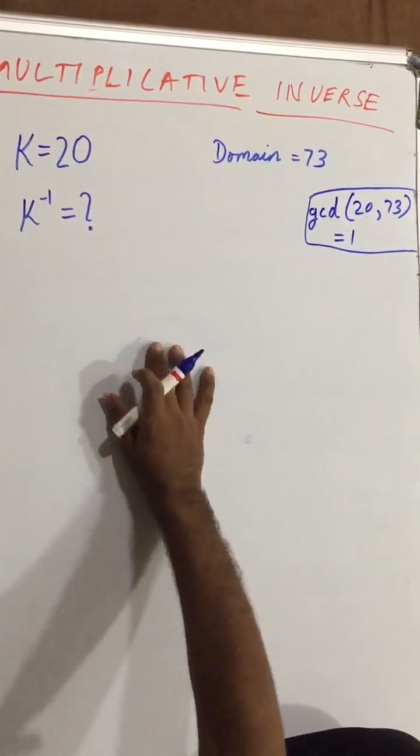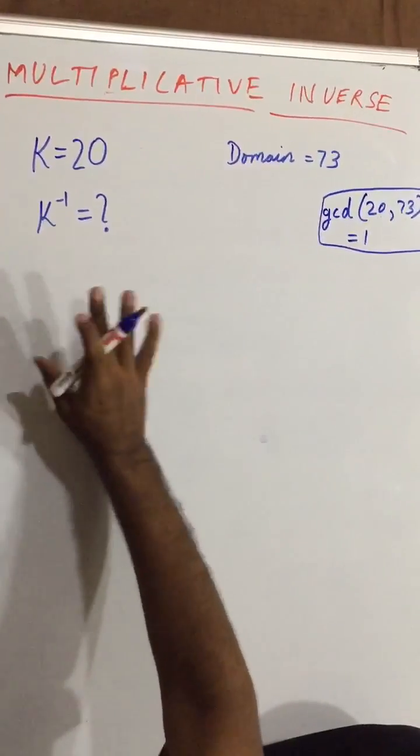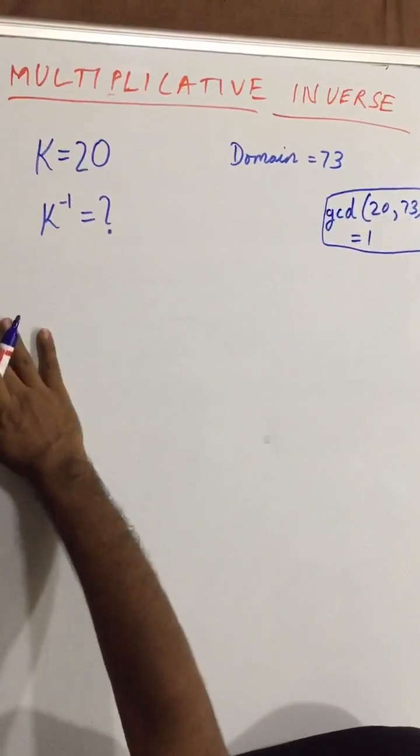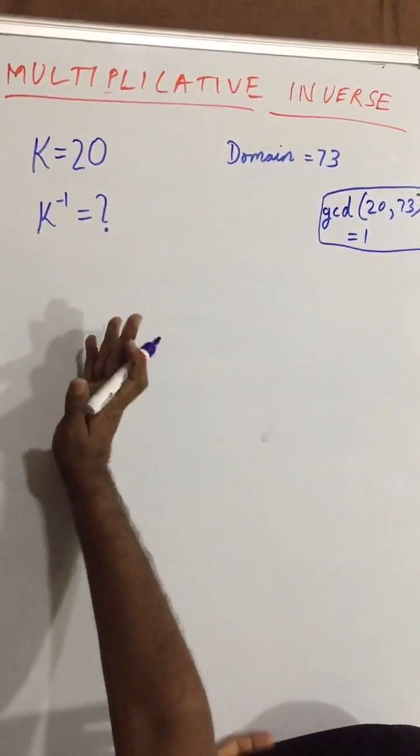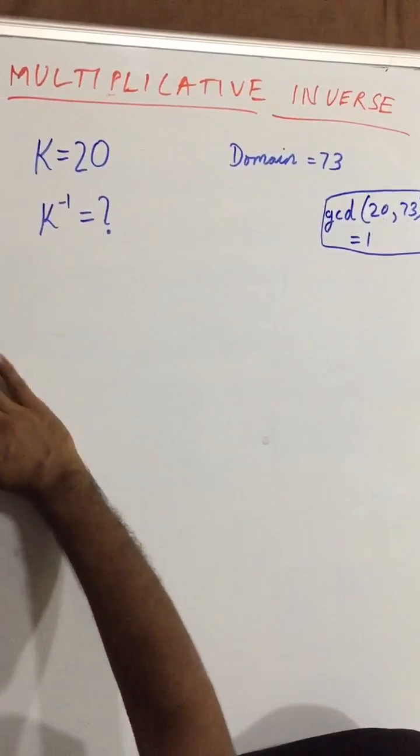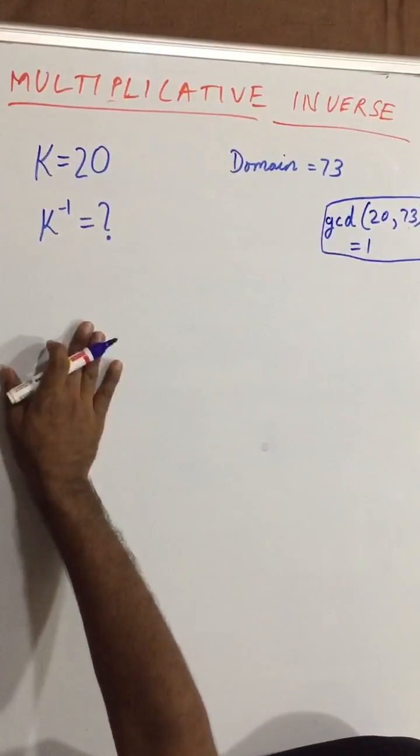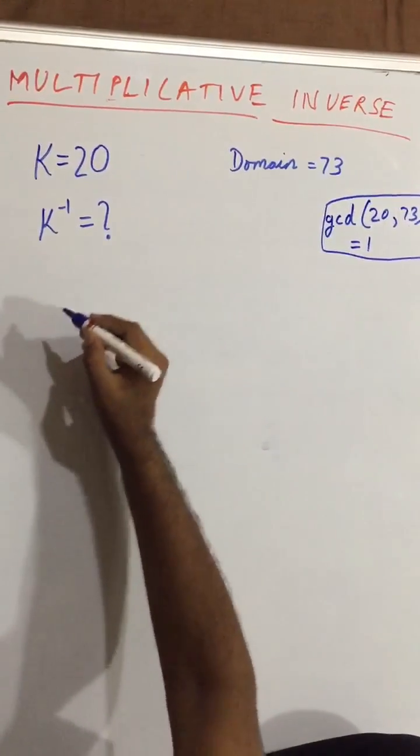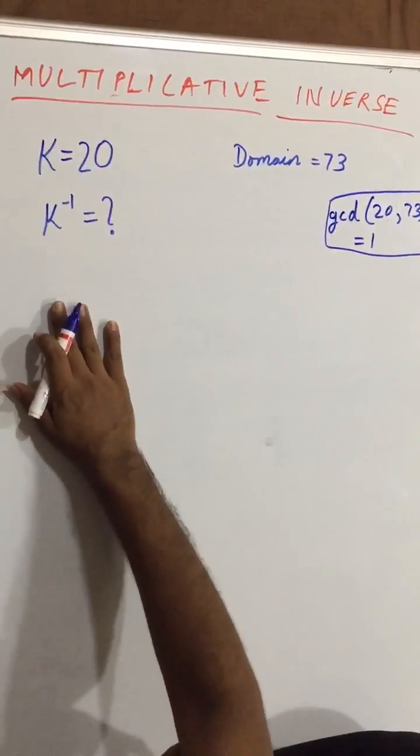So to solve this we have to use the exact method of the Euclidean algorithm, which is also known as the greatest common divisor method. This is just the extended Euclidean algorithm. So what extended we are going to use over here is what I am going to show you now.